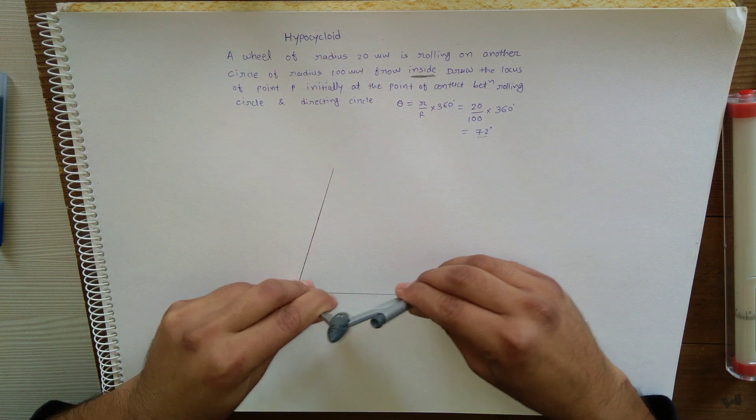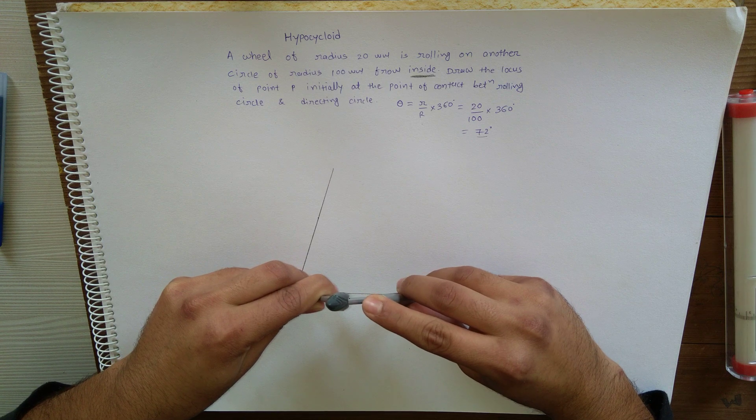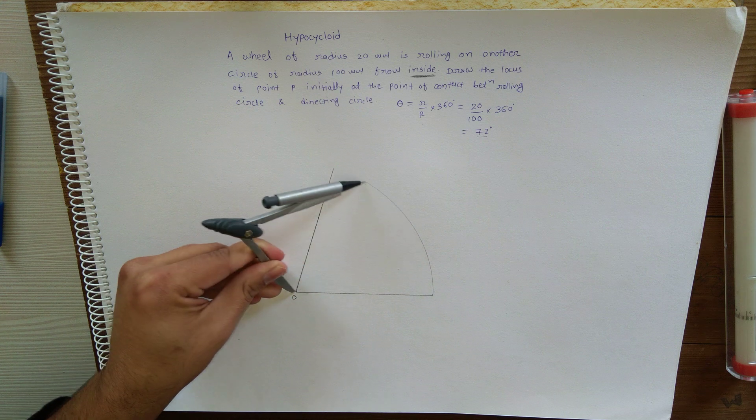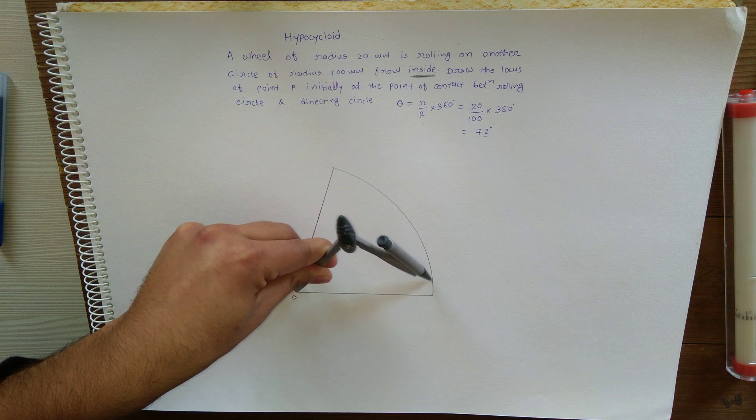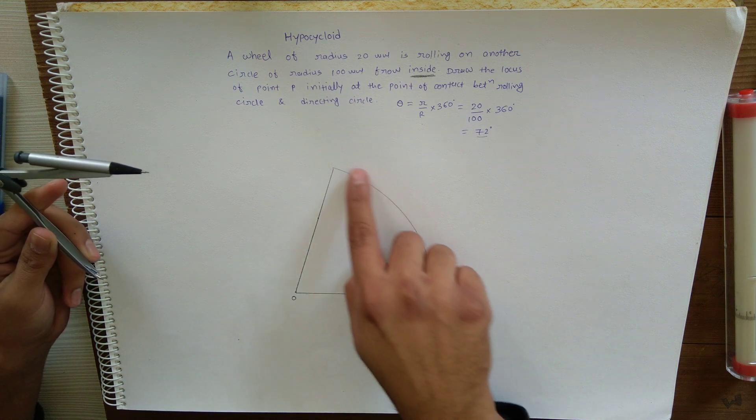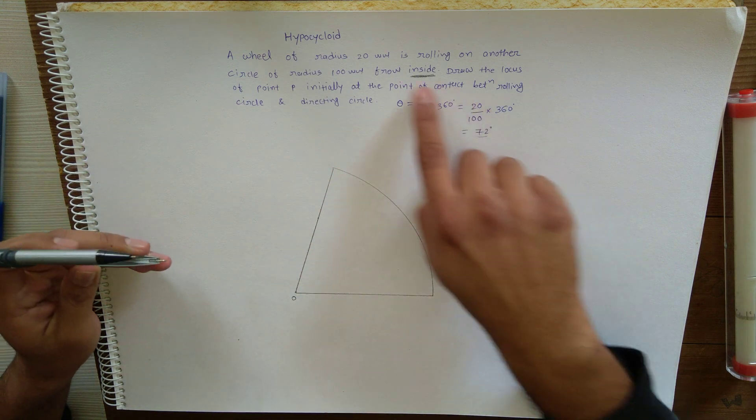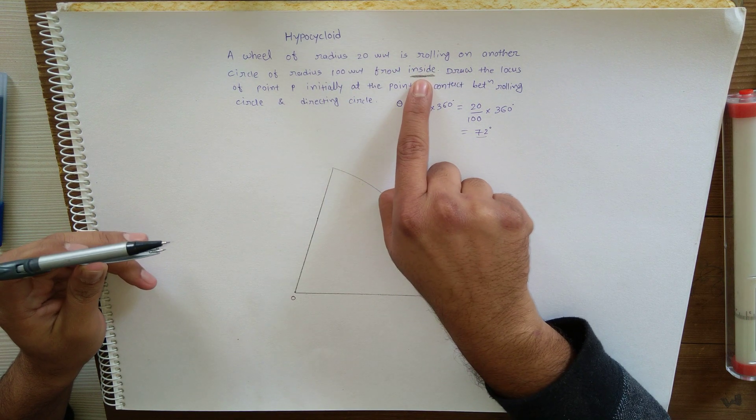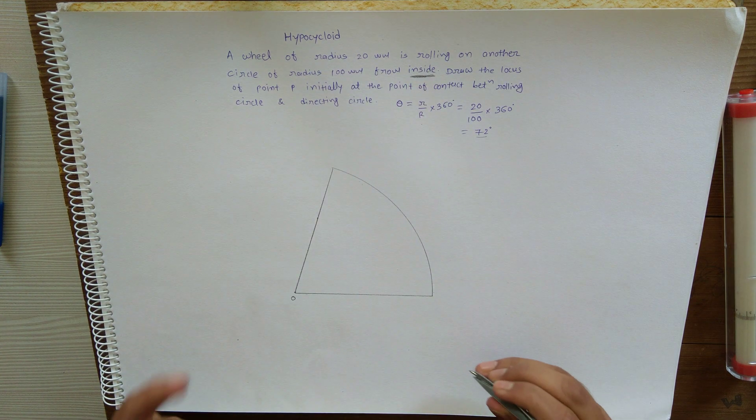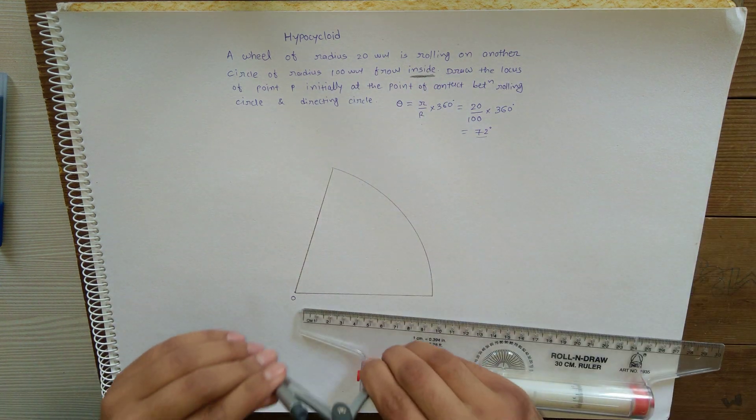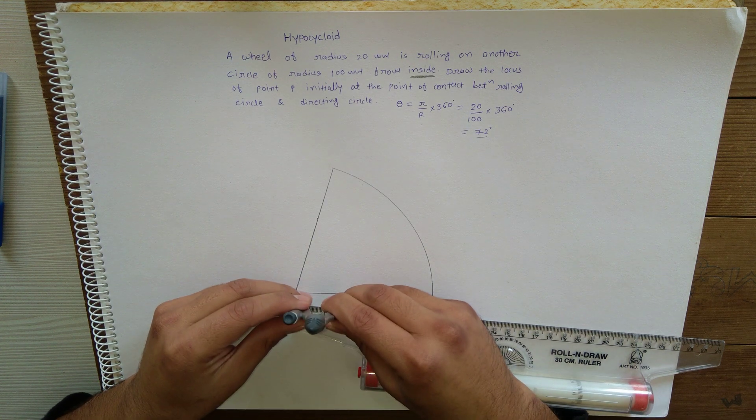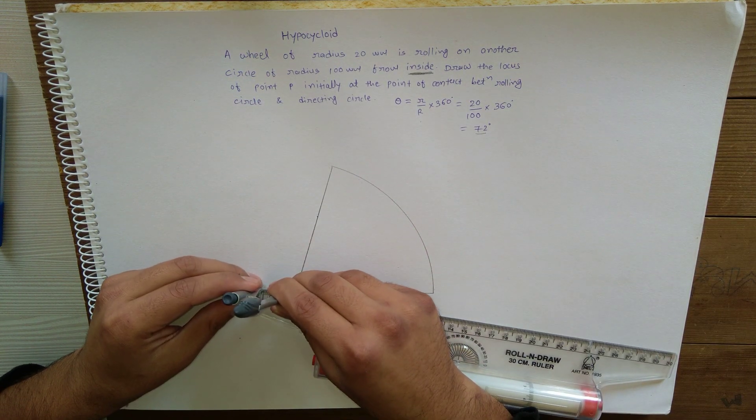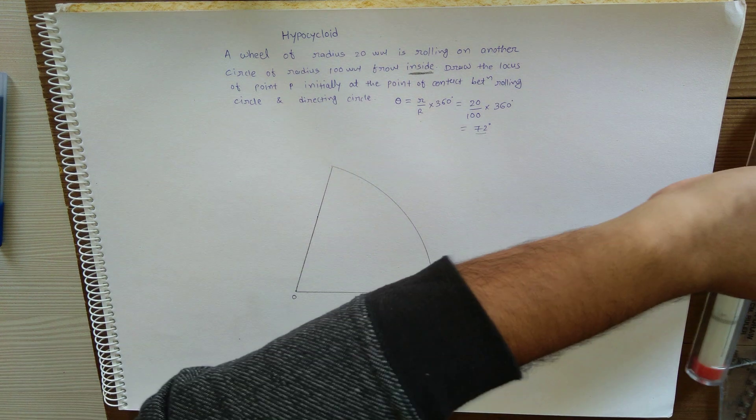The bigger circle, or part of the bigger circle, is now drawn. The rolling circle is rolling from inside the bigger circle or directing circle. The rolling circle radius is 20 mm.